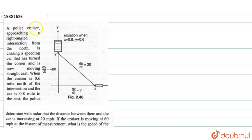In the question, there is a police creature which is approaching a right angle intersection from the north, chasing a speeding car that has turned the corner and is now moving straight east. The police is 0.6 miles north of the intersection. The car is 0.8 miles to the east.